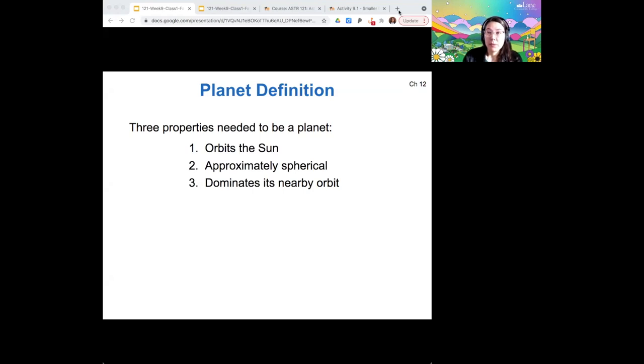So there are now three properties that NASA considers planets to have. One, the planet needs to orbit the sun instead of some other object. So for example, Charon, Pluto's moon, is not a planet because it orbits Pluto. It needs to be approximately spherical in shape and it also needs to dominate its nearby orbit.